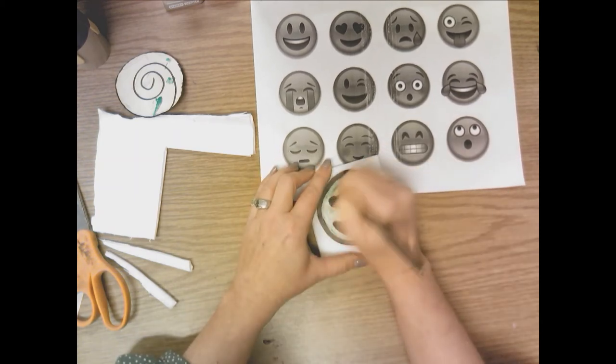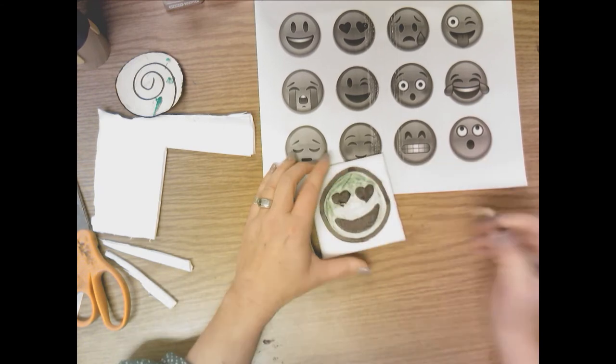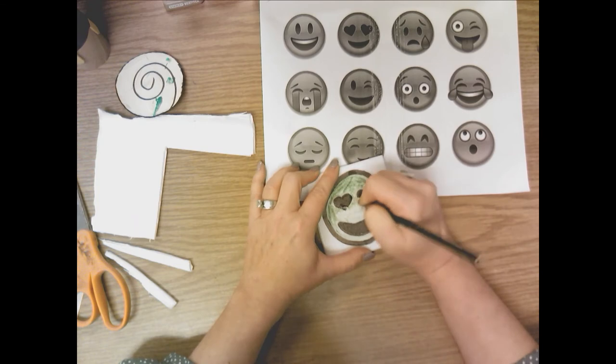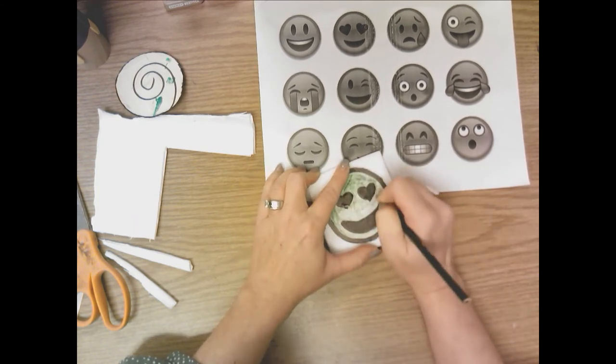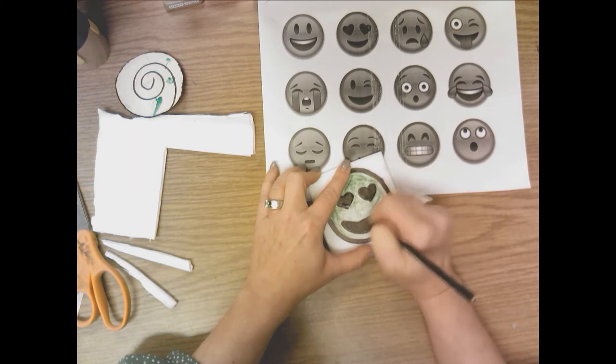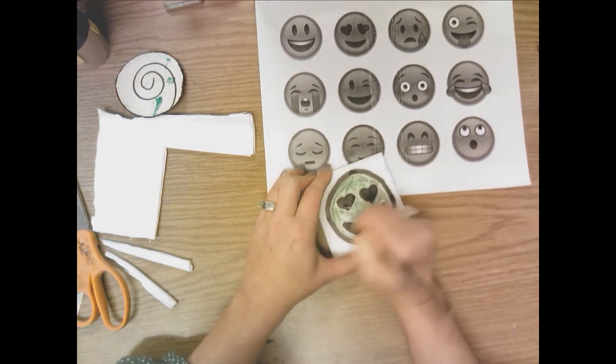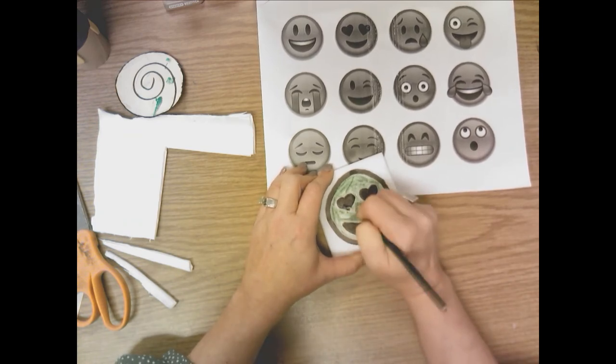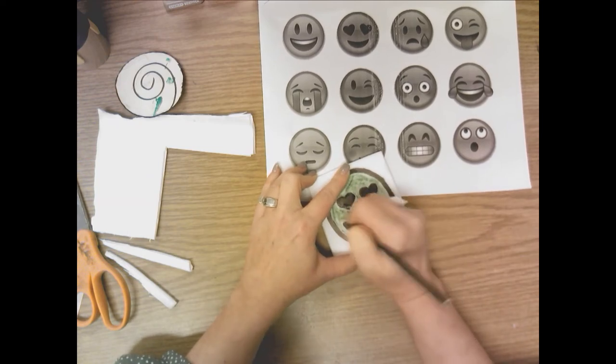So you're going to find the styrofoam is going to catch your pencil a little bit and not want to let you go a certain direction. So pulling towards you is helpful, pushing away, not so much. So always pull towards you and you're pressing down firmly so you can get all of this white area away from the marker, the black marker.